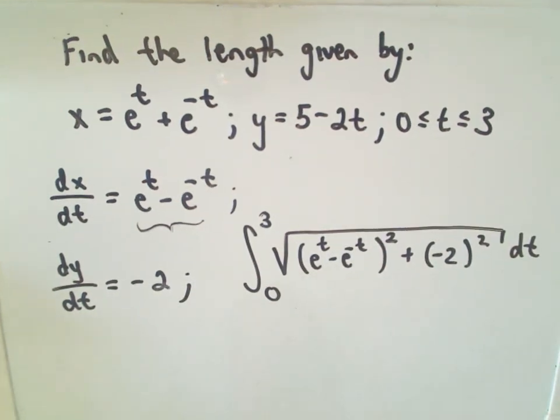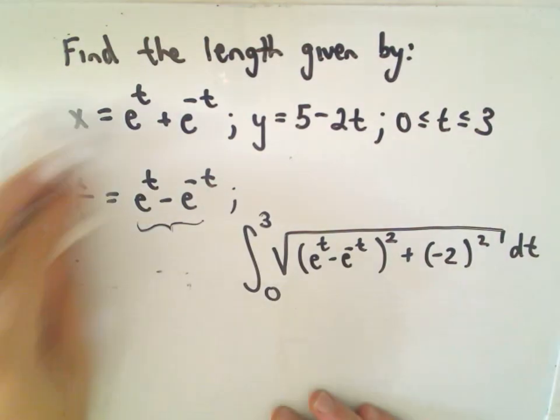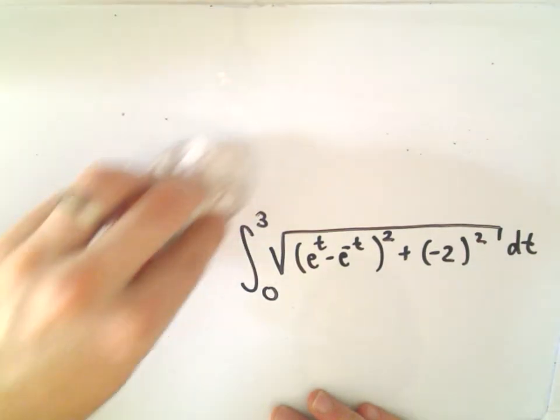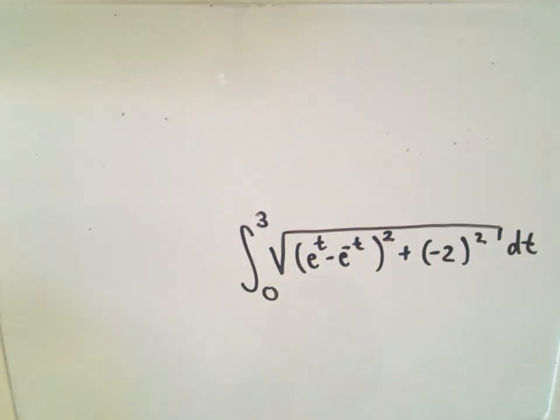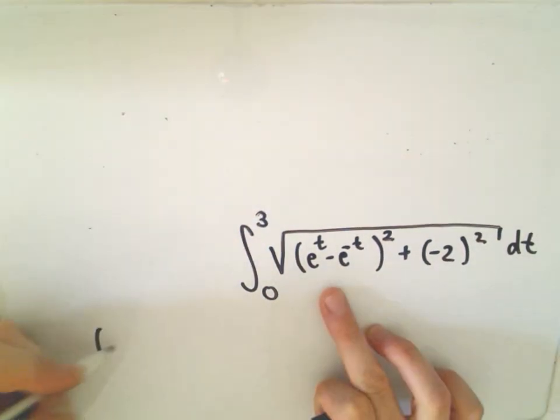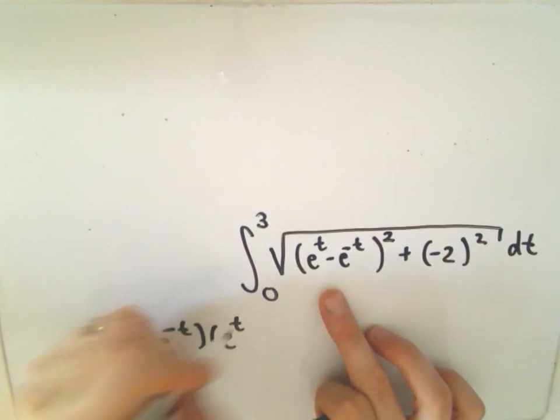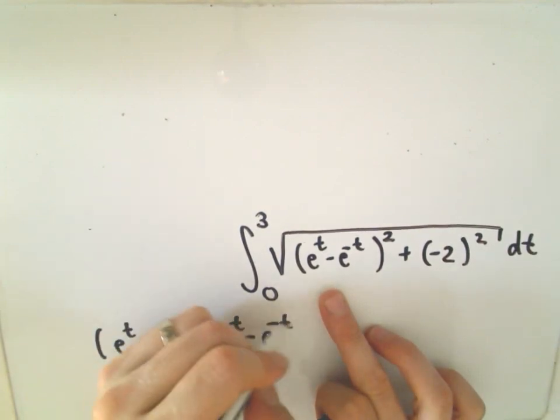Okay, so now it's just an integration problem. Okay, so now we have to evaluate this integral. And the first thing I'm going to do is multiply out the e to the t minus e to the negative t squared. I'm going to go ahead and FOIL, multiply that stuff out.